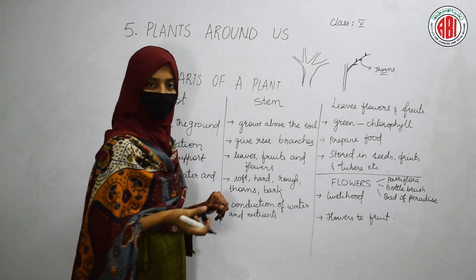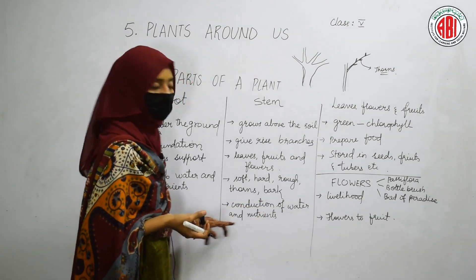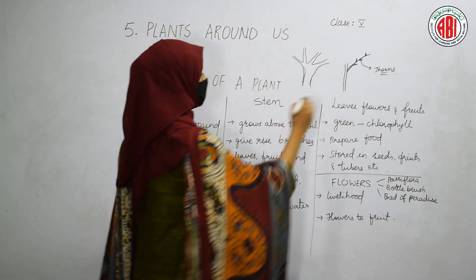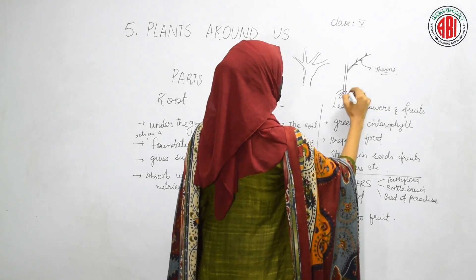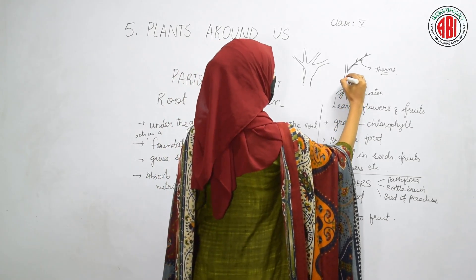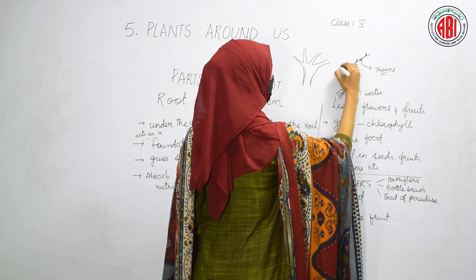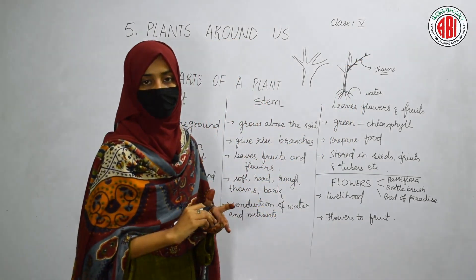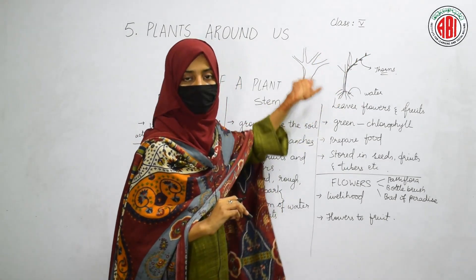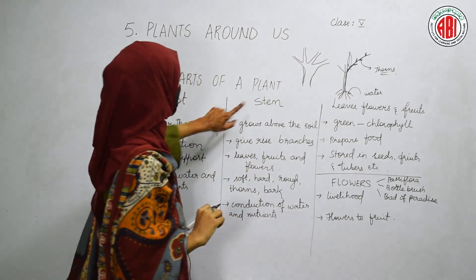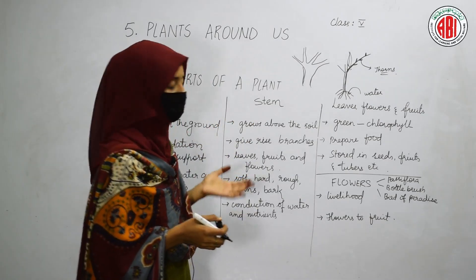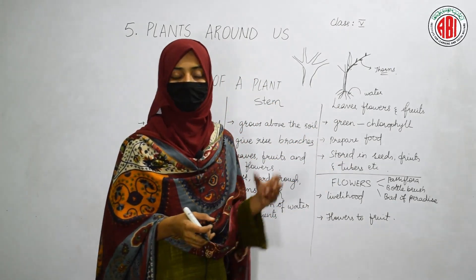When we talk about the function of the stem, it helps in the conduction of water and nutrients. Conduction means transportation. After the roots absorb the water, that water travels upwards and reaches the different stems, leaves, and all the parts of the plant. This transportation of water and minerals to the different parts of the plant is carried out by the stem.